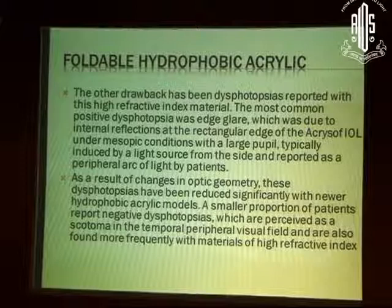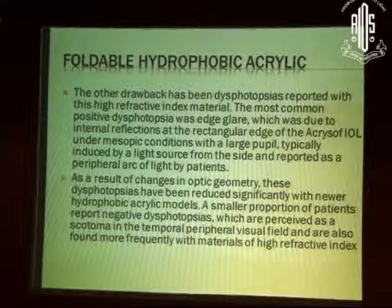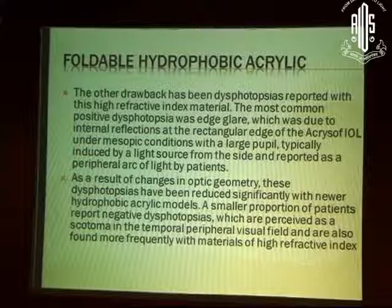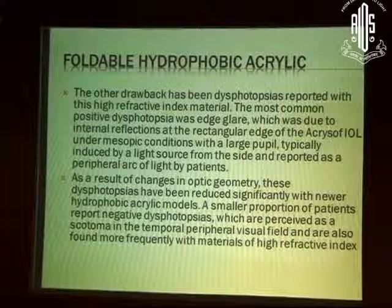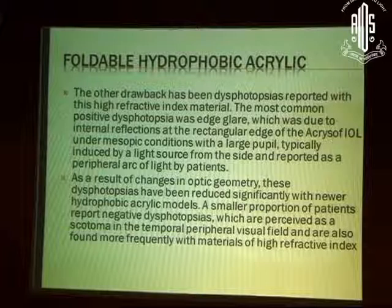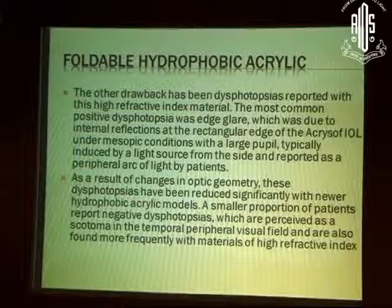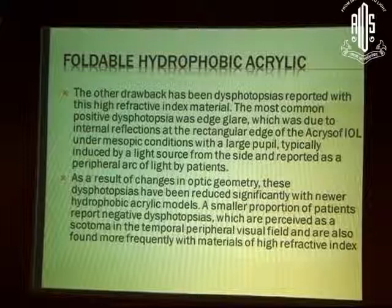To give you an example: retrobulbar injection. When you give a retrobulbar injection, it hurts. You can tell the patient that when you feel pressure inside the eye during the injection, it means the injection is going in the right place. You have converted something unhappy into a positive experience — it's only a method of framing words. So too, the problem of reflections and glinting on the surface — what we call photopsia — tended to occur with these acrylate lenses.